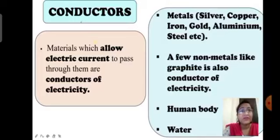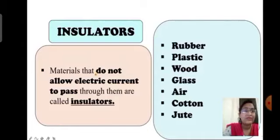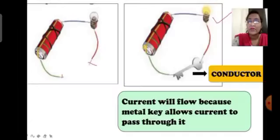Exactly opposite to conductors are insulators. Materials which do not allow electricity or current to pass through them are known as insulators. Some examples of insulators are rubber, plastic, wood, glass, cotton, and jute — these do not allow electricity to pass through them. To understand more about insulators and conductors, let's do an activity.